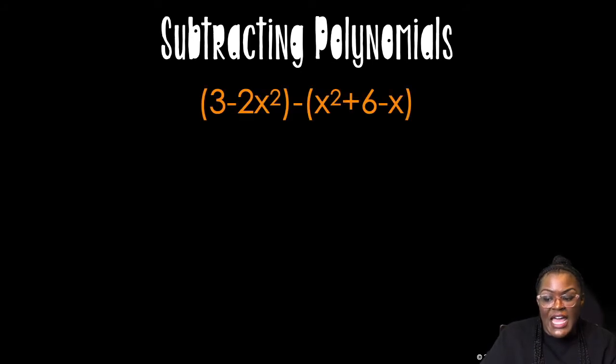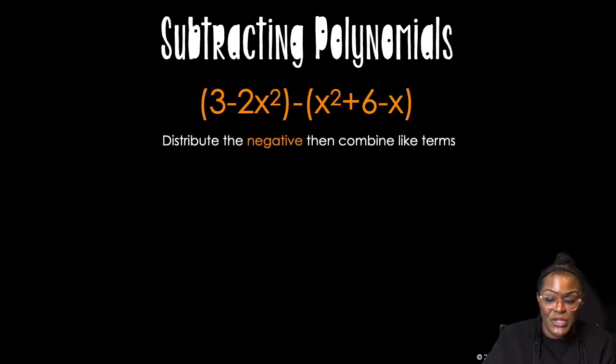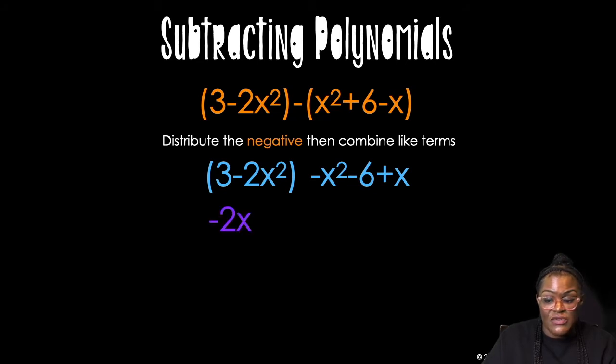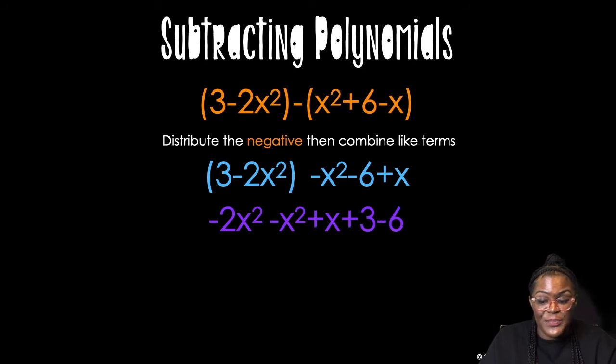Subtracting, on the other hand, it just has a common mistake. You need to distribute the negative, then combine like terms. So I always tell my students that first. Distribute the negative and combine like terms afterwards. So now that I've distributed the negative, I'm going to rearrange for the quadratics to be together, the linear term, and then the constants, and then I'm going to combine.